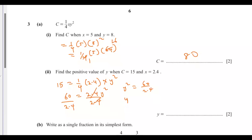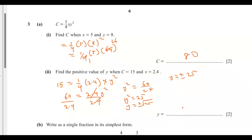So y squared equals 25, meaning y equals plus or minus the square root of 25. Since we need the positive value, y equals positive 5. That's the final answer for this part.